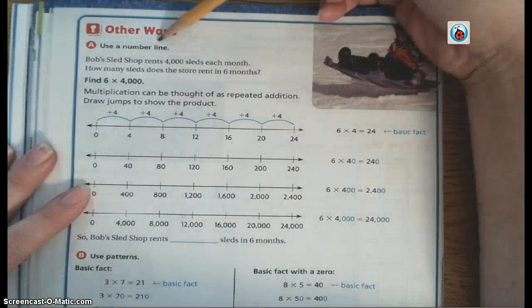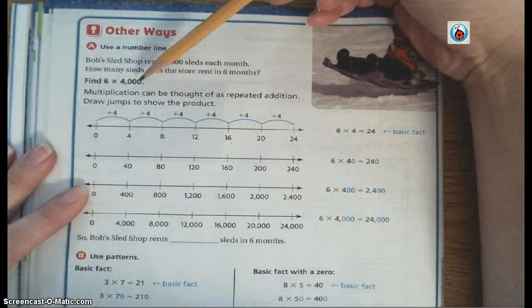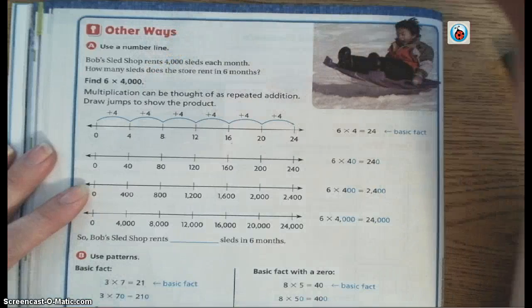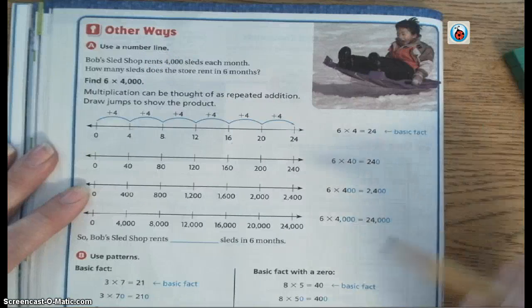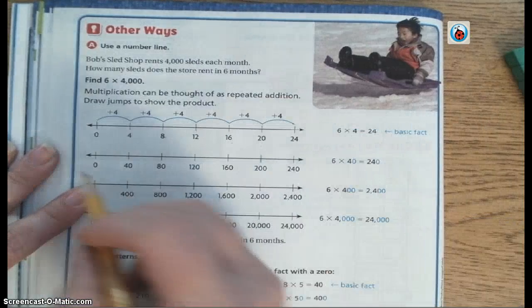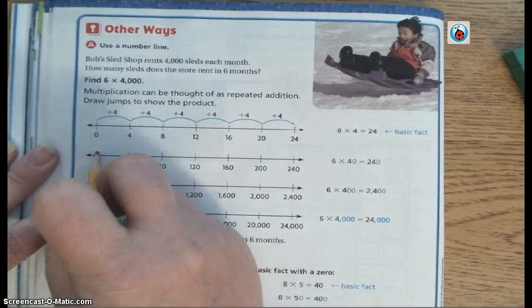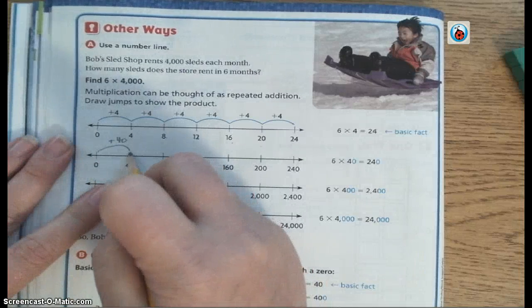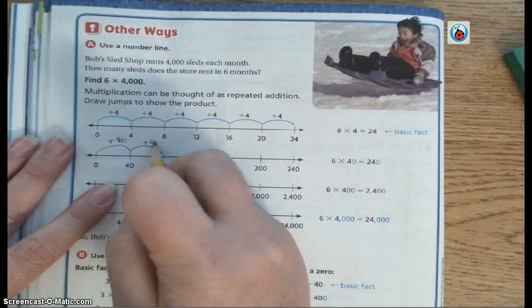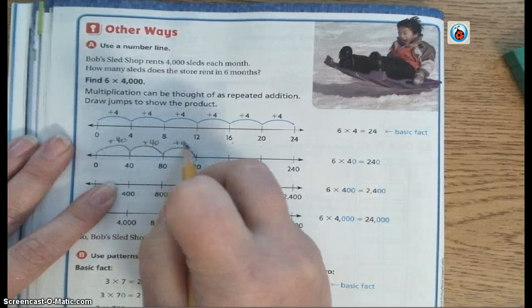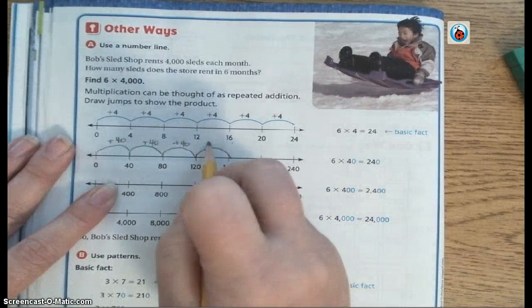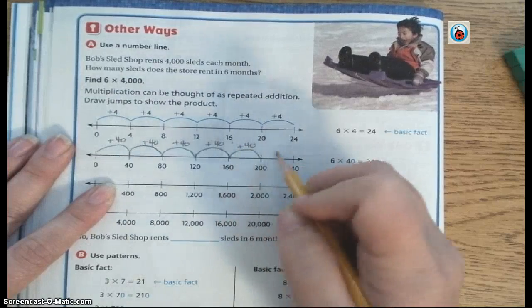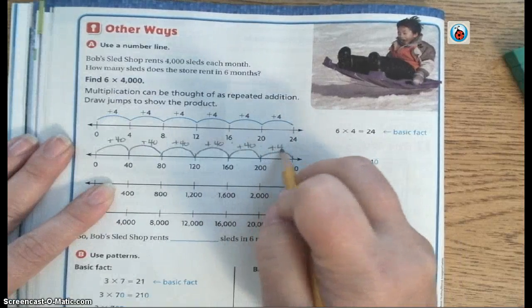But my problem isn't 6 times 4. My problem is 6 times 4,000. So instead of doing, so what I'm going to do is I'm going to take that up and multiply by 10 with my, so now I'm going to be doing 6 times 40. So instead of making jumps of 4, I'm going to add 40 each time. So 0 plus 40 is 40, 40 plus 40 is 80, 80 plus 40 is 120, 120 plus 40 is 160, 160 plus 40, 200 plus 40 is 240.